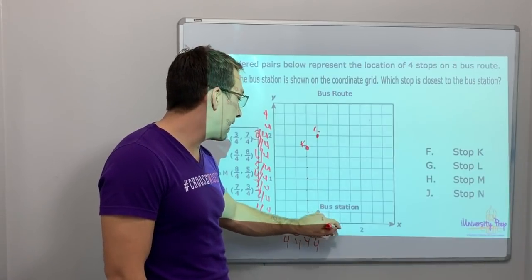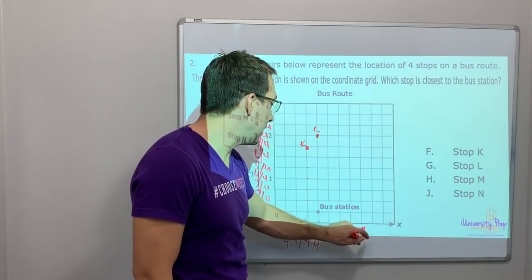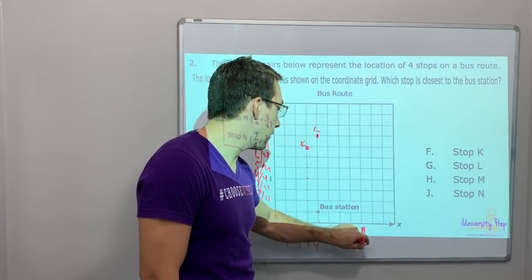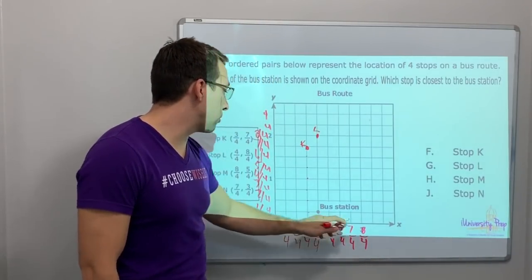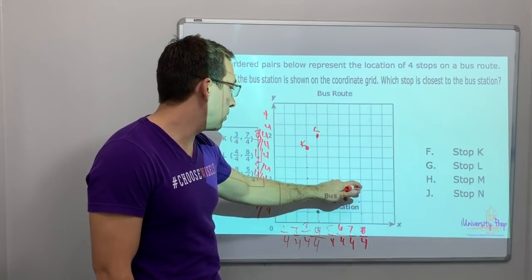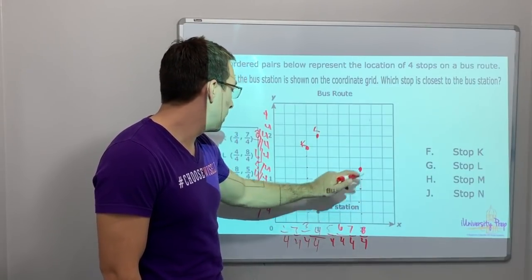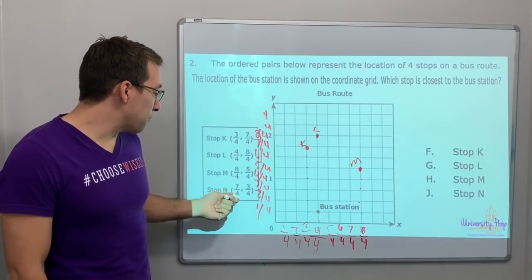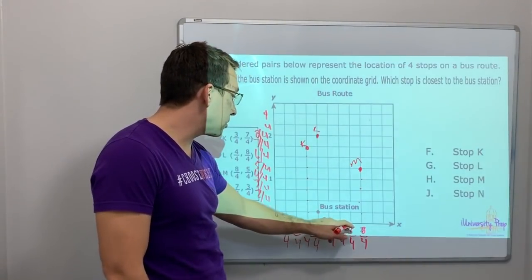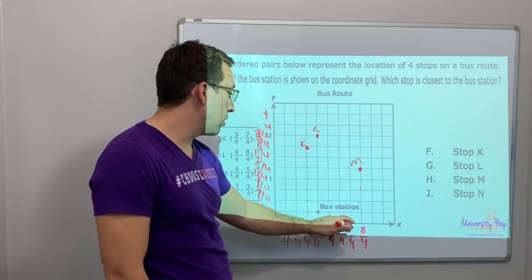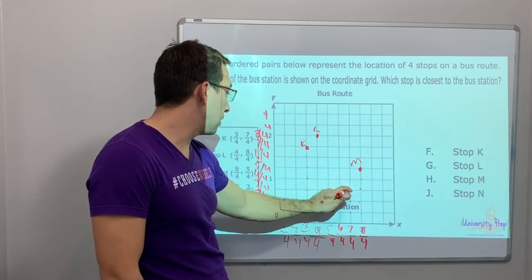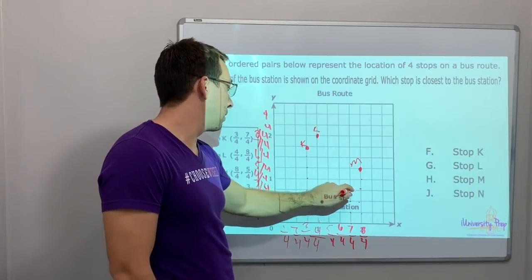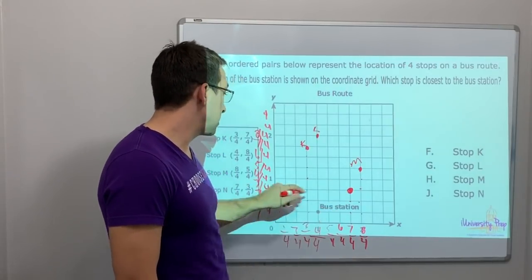8/4 and 5/4 — that is M. So we're going to go 1, 2, 3, 4, 5, 6, 7, 8 on the x, and 1, 2, 3, 4, 5 on the y. So 8/4 and 5/4 — that is M. And then 7/4 and 3/4: 7 over 4 — 1, 2, 3 — and that's 3/4. That is stop N.